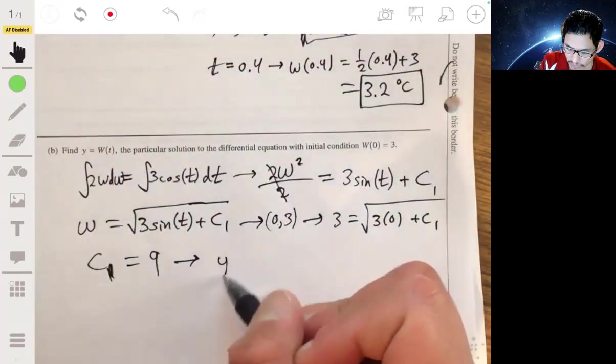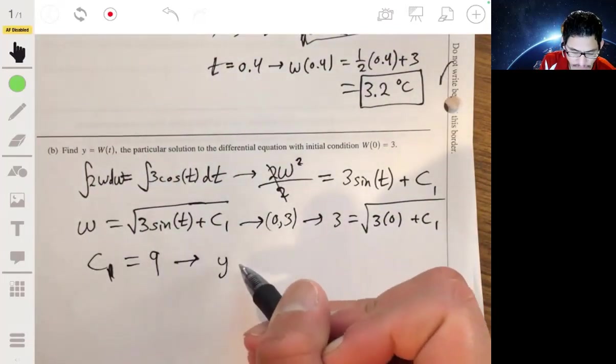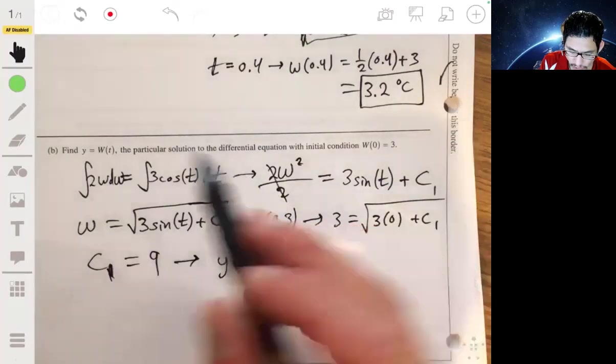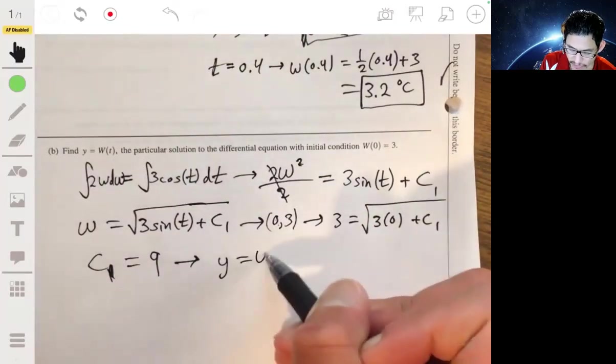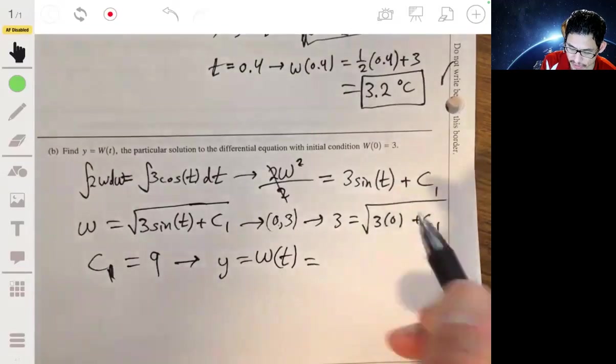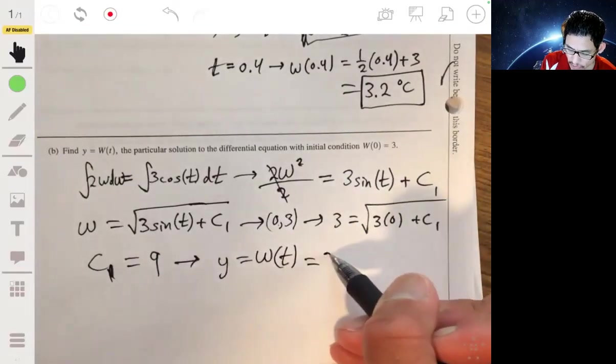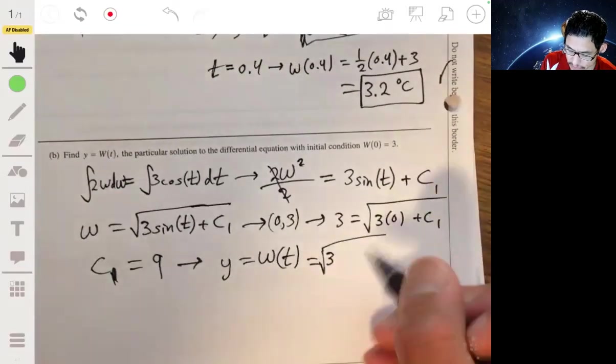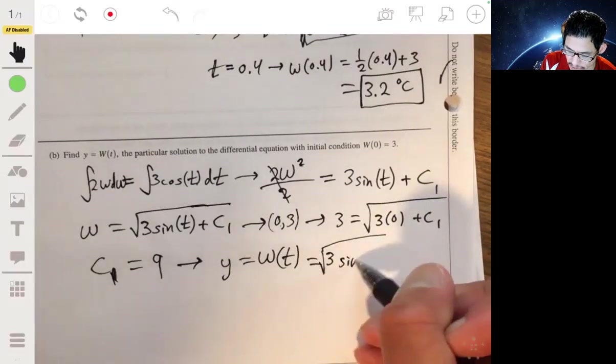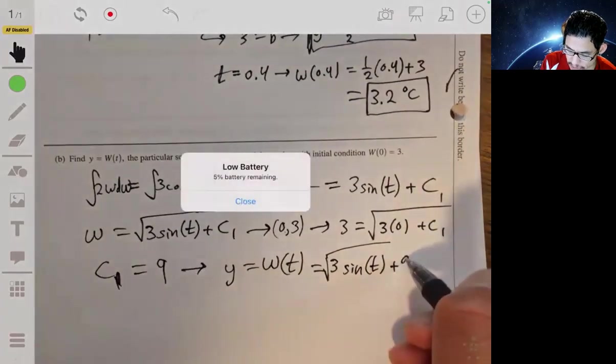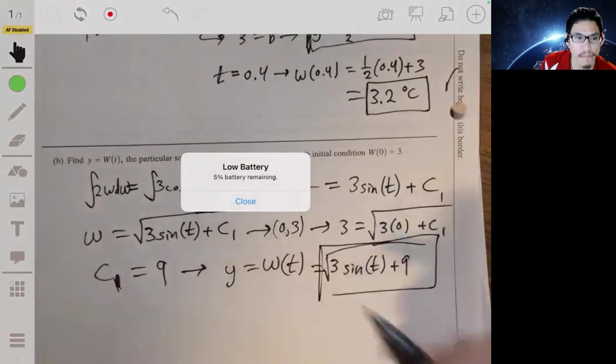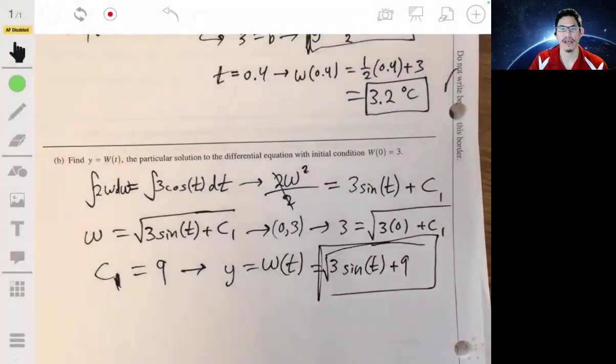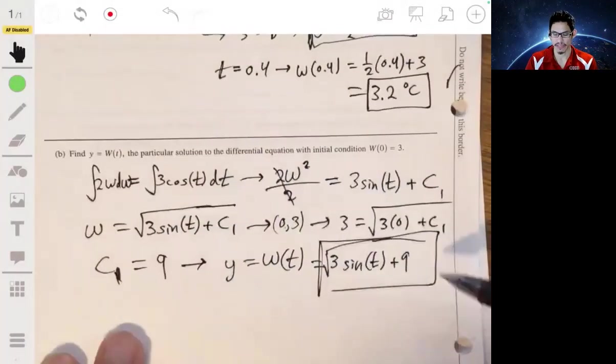So, we can write our final solution for Y or W as being equal to the square root of 3 sine of T plus 9. The battery's dying. Let's see if I can beat it. Only one more part left. All right.